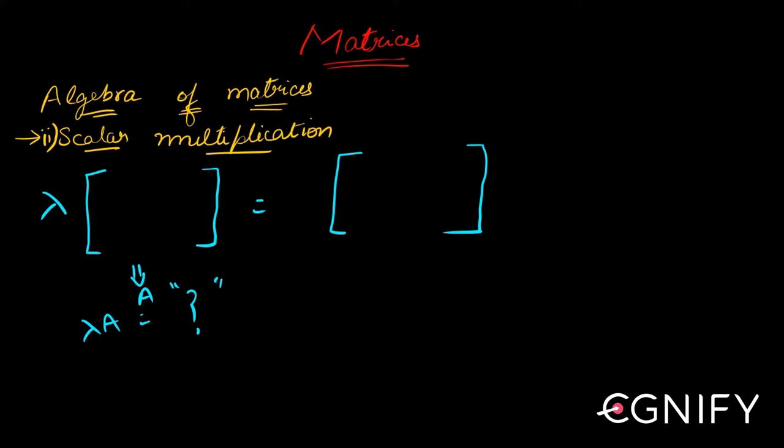For that I will simply do this. I will take a 2 by 2 matrix. If I multiply lambda to this, what will happen is each and every element inside will individually get multiplied to lambda. That is what you mean by multiplying a scalar to a matrix. This is what the answer is. So this will also be a 2 by 2 matrix of course.